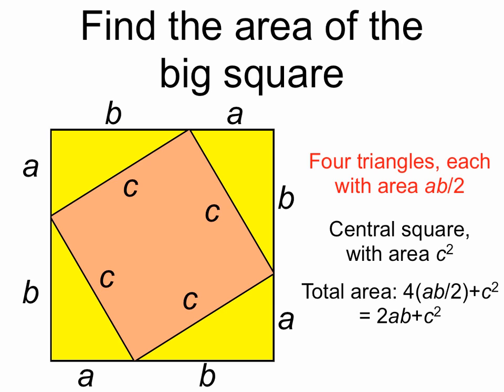To move on to the second method, we can look at the four triangles around the edge, the right triangles, as well as an orange square with side length c inside. The area of these four triangles, each triangle has area of one half times base times height, or ab over two. And the central square has area c squared. So the total area of the big square is 4ab over two plus c squared, which we can simplify to 2ab plus c squared.